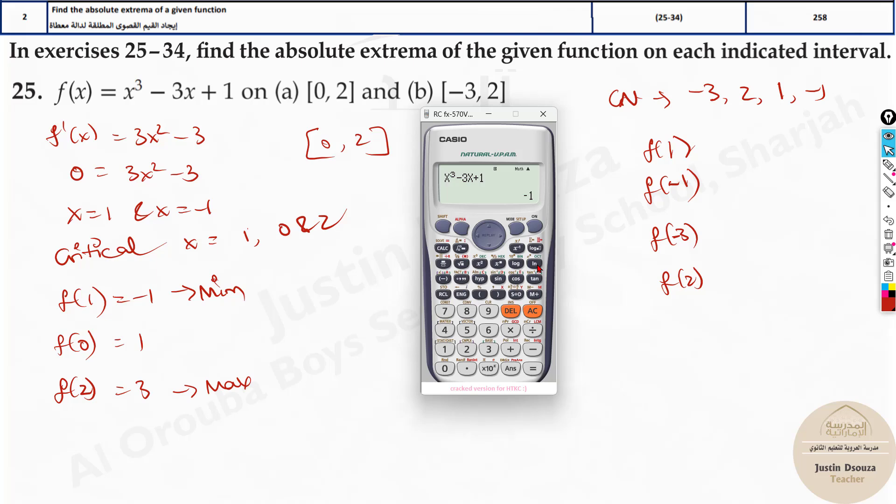Here all you need to do is calc at f of 1, it is minus 1. Calc at minus 1 we get 3. Calc of minus 3 is minus 17 and calculating at 2 we get 3. So the maximum points are 2 points, 3 and 3 both are maximum. This and this would be absolute maximum and the absolute minimum is at f of minus 3.